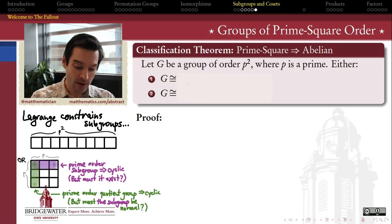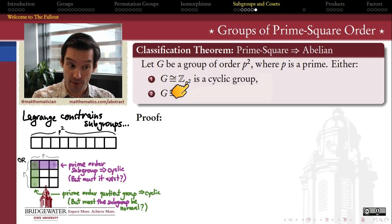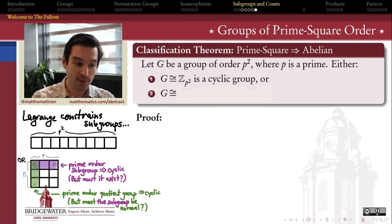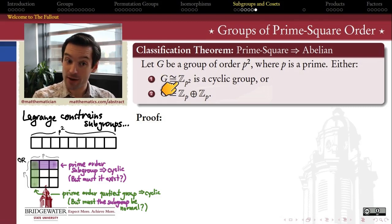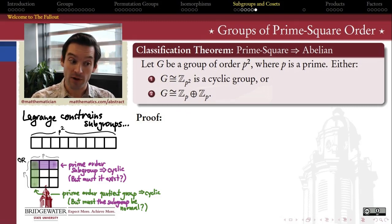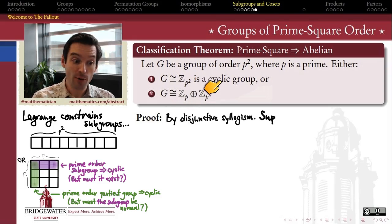These are the questions we must answer to succeed in this classification theorem. And answer them we will — to guarantee that either my group is a cyclic group of order p-squared, with a generator of order p-squared, or the other possibility is that it's isomorphic to the external direct product of Z_p with Z_p. It turns out these are the only two possibilities for groups of prime-squared order. One corollary is that all of these are abelian groups, so there are no non-abelian groups whose order is the square of a prime.